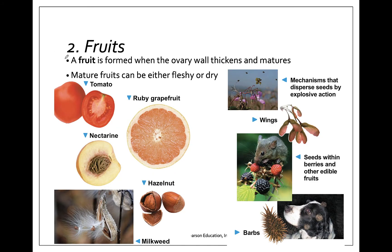Our second characteristic are fruits. Fruits are actually formed from the ovary — the ovary of the flower will thicken and mature and then become the actual fruit with the seeds inside of it. For example, a pea pod is the fruit, and inside the little peas are the ovules. A fruit can be fleshy or dry.